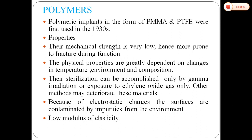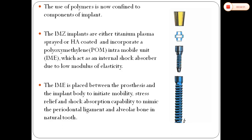Other sterilization methods may deteriorate these materials. Because of electrostatic charges, the surfaces are contaminated by impurities from the environment, and they have a low modulus of elasticity. The use of polymers is now confined to components of implants. The IMZ implants are either titanium plasma-sprayed or hydroxyapatite-coated, and incorporate a polymethylene intramobile unit which acts as an internal shock absorber due to its low modulus of elasticity. The IMZ is placed between the prosthesis and the implant body to provide mobility, stress relief, and shock absorption capability to mimic the periodontal ligament and alveolar bone in a natural tooth.